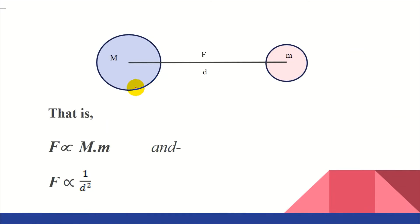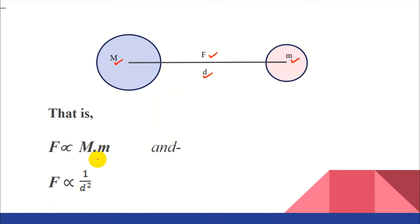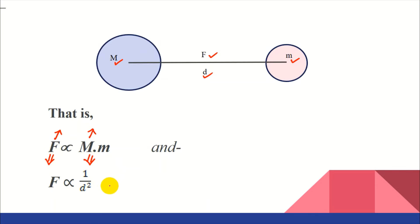We can see in this diagram that the mass of the first body is represented by capital M, the mass of the second body by small m, D being the distance between their centers, and F being the force of attraction between the two bodies. F is directly proportional to capital M times m — meaning if you increase the mass of either or both bodies, the force of attraction will also increase. And if you reduce the mass or masses, the force of attraction will also be reduced.